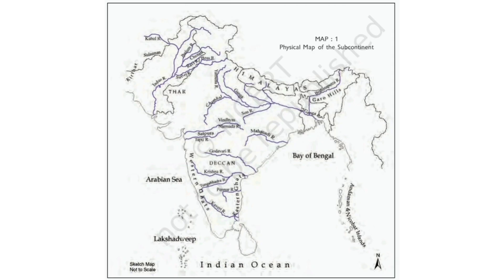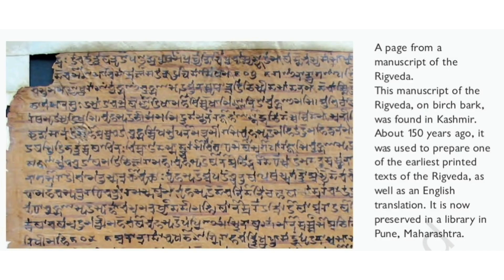A page from a manuscript of the Rig Veda — this manuscript on birchbark was found in Kashmir. Rig Veda ki manuscript ka ek page, bhurja vriksha ki chaal par likhi — yeh manuscript Kashmir mein payi gayi thi. Lagbhag 150 saal pehle Rig Veda ko pehli baar chhaapne ke liye iska use kiya gaya tha, aur isi manuscript ko dekhkar English translation taiyar hua. Yeh manuscript Pune mein ek library mein abhi bhi rakhi hui hai.